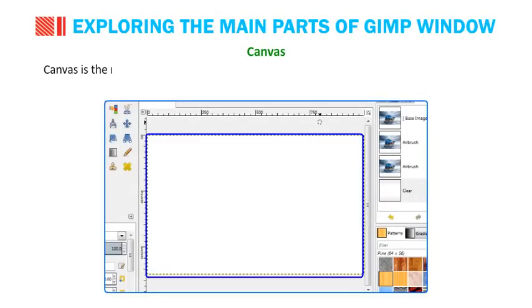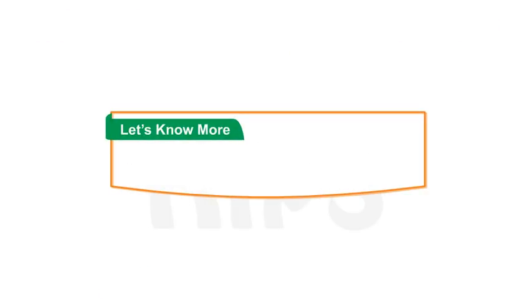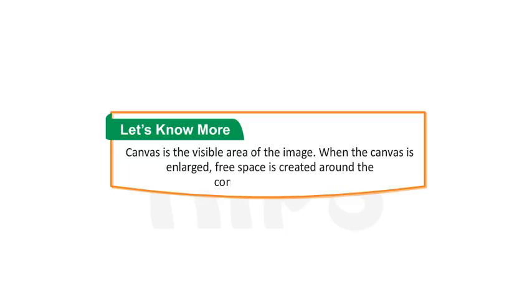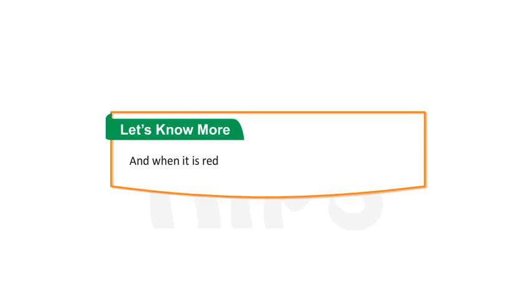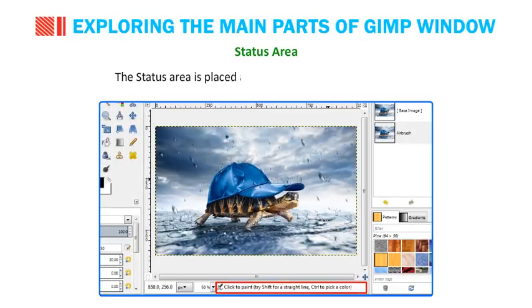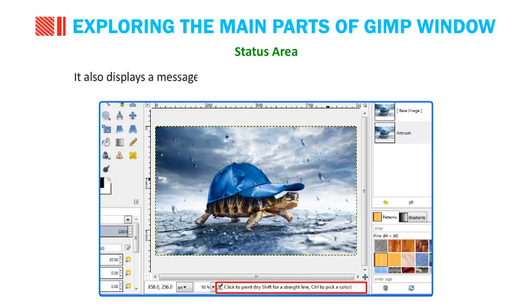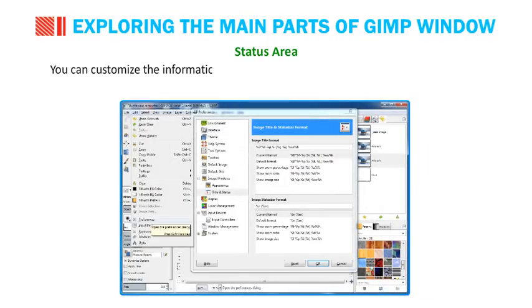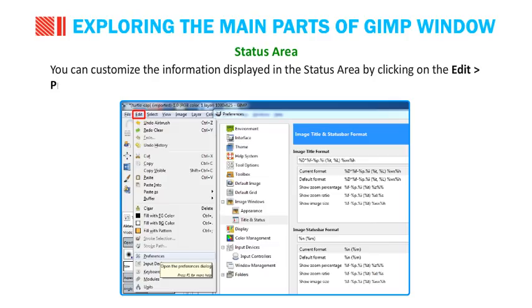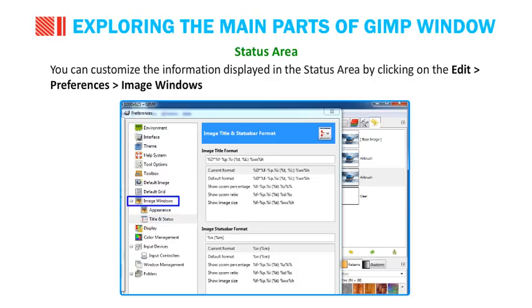Canvas is the rectangular area in the center where all editing, resizing or cropping of the image is done. It is the visible area of the image. When the canvas is enlarged, free space is created around the contents of the image; when it is reduced, the visible area is cropped to fit. The Status Area is placed at the bottom of the image window. It displays the name of the current layer or image and the amount of system memory used. It also displays a message explaining how to use the currently selected tool. You can customize the information displayed in the status area through Edit, Preferences, Image Windows, Title and Status.